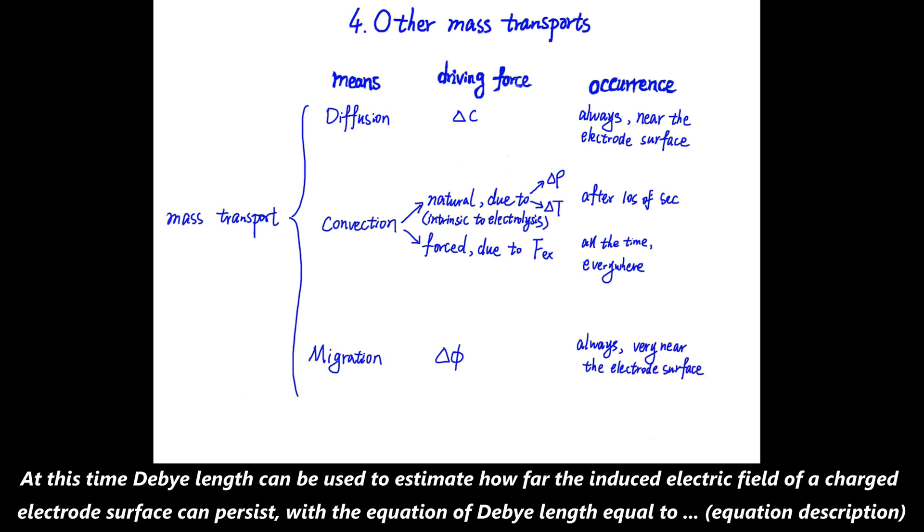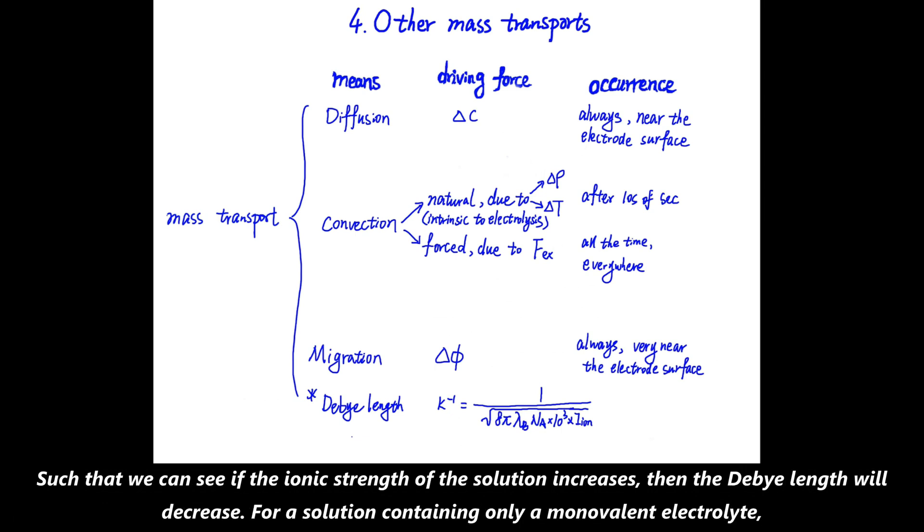At this time, the Debye length can be used to estimate how far the induced electric field of a charged electrode surface can persist. With the equation, the Debye length = 1/√(8π·nb·NA·1000·I), where nb is the Bjerrum length of a medium, which for water is 7 Angstroms, NA is Avogadro's constant, and I is the ionic strength of the electrolyte. Such that we can see if the ionic strength of the solution increases, then the Debye length will decrease.